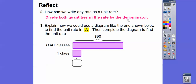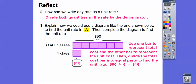We can also use a diagram to find the unit rate. For the B&B Test Prep example — six classes for $90 — the big bar represents $90 and the small bar represents one class. We divide the total cost bar into six equal parts because there are six classes. Then dividing 90 by 6 tells us each unit bar is $15. So one class costs $15.